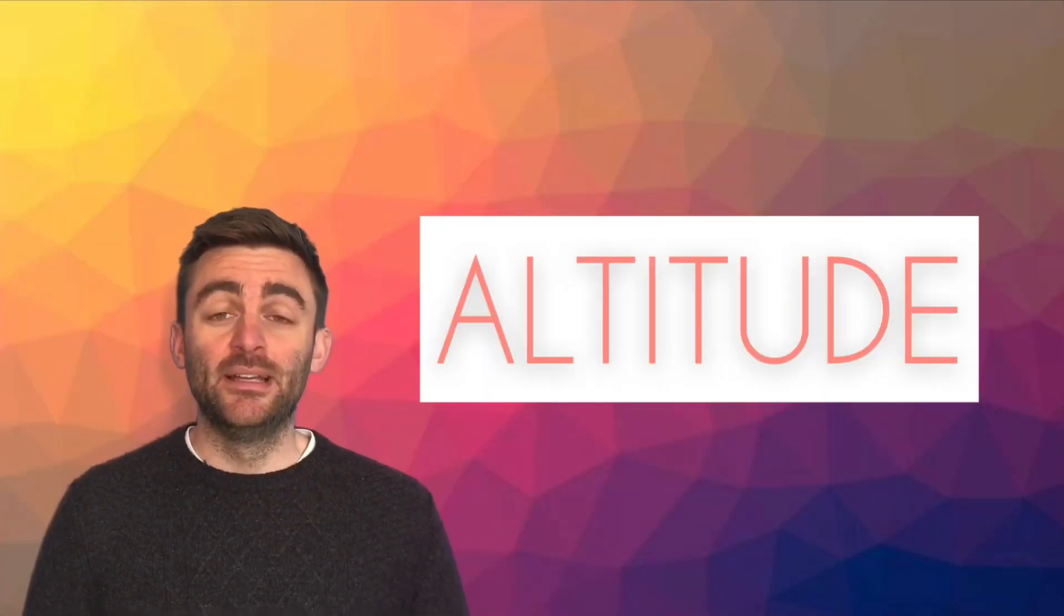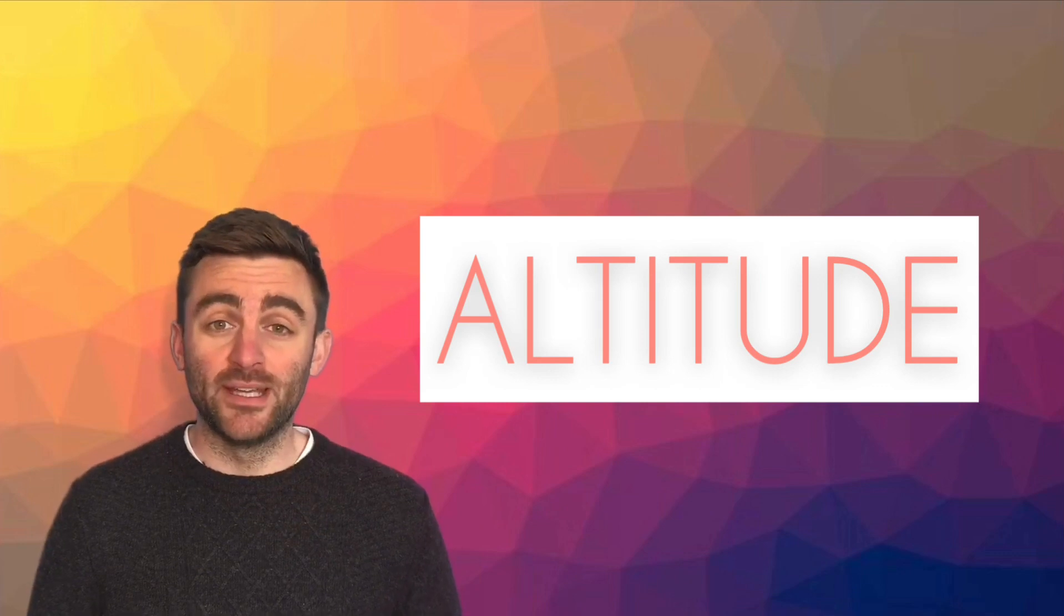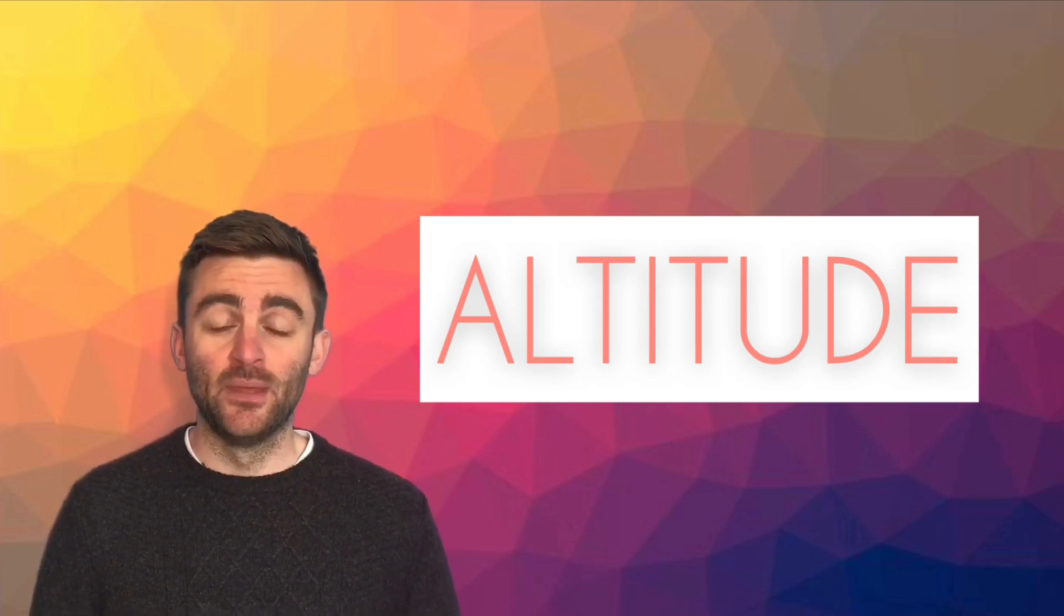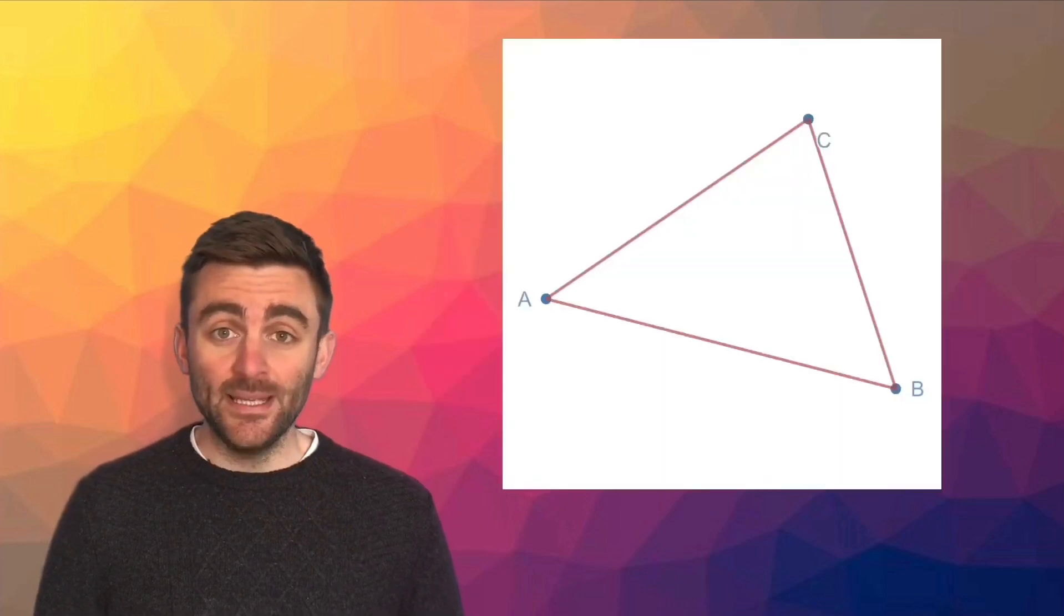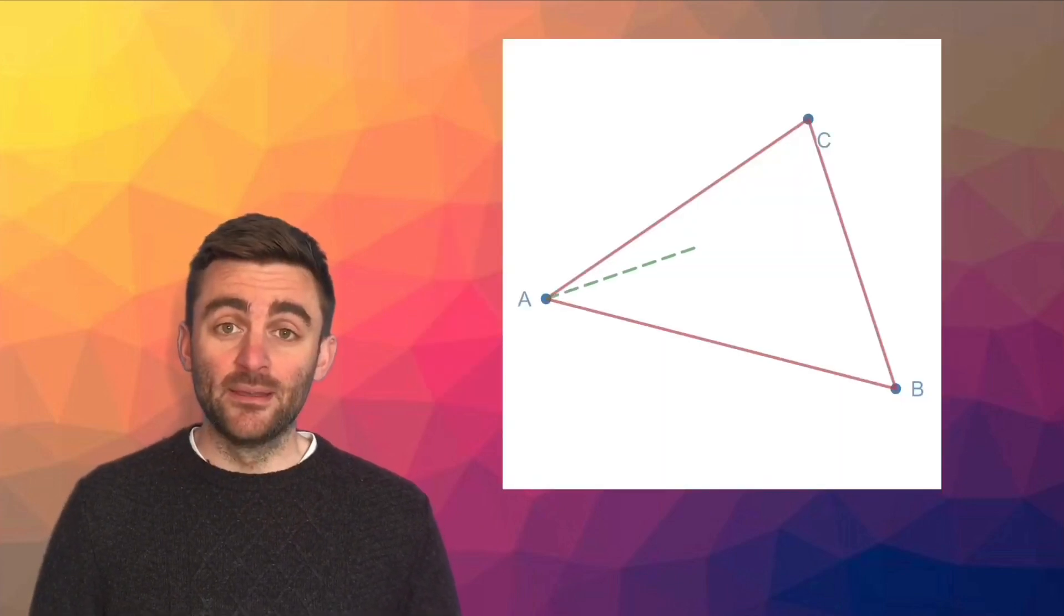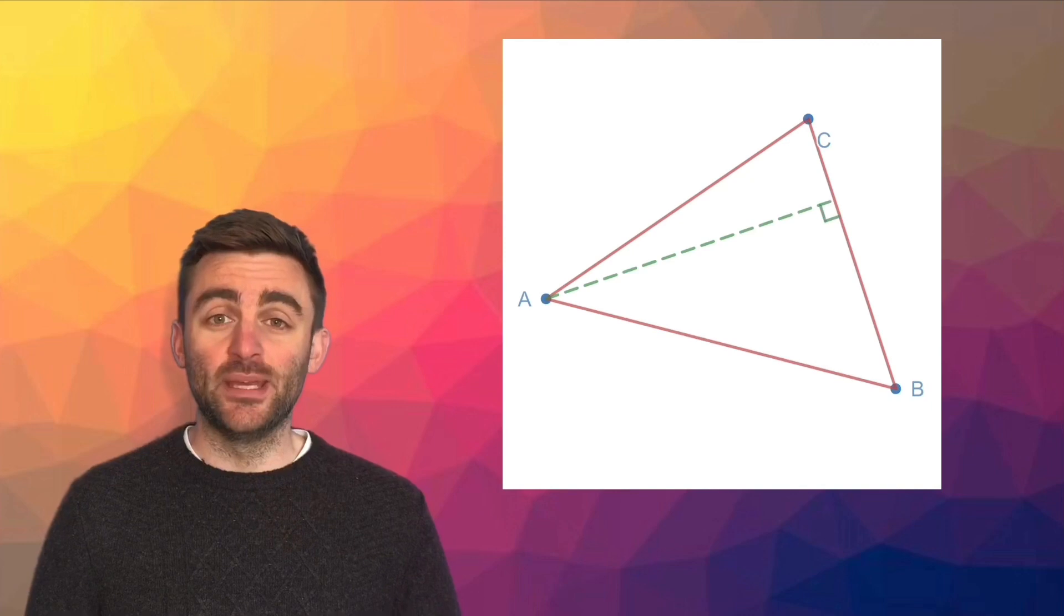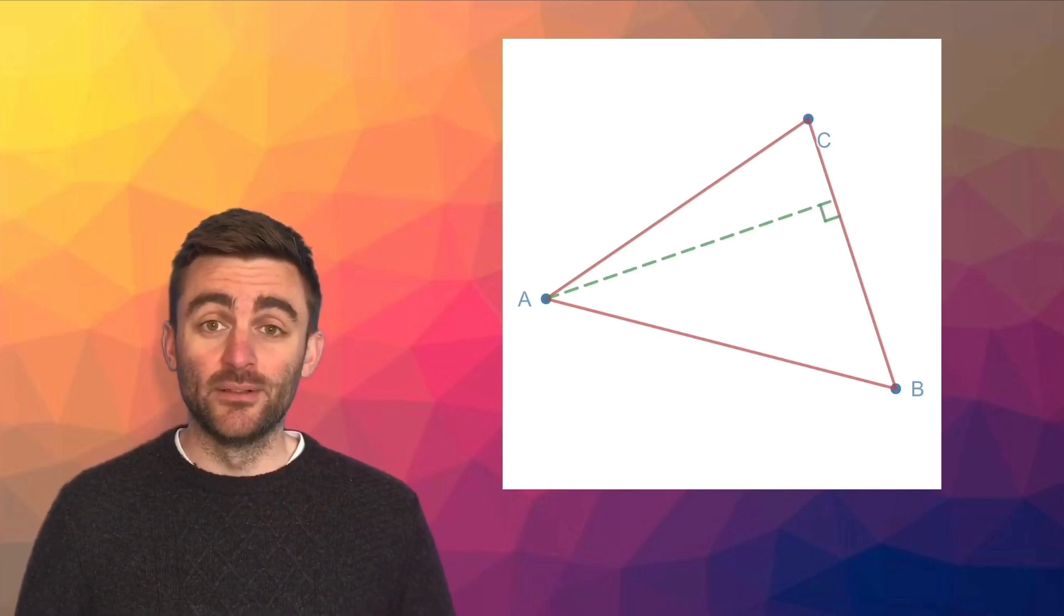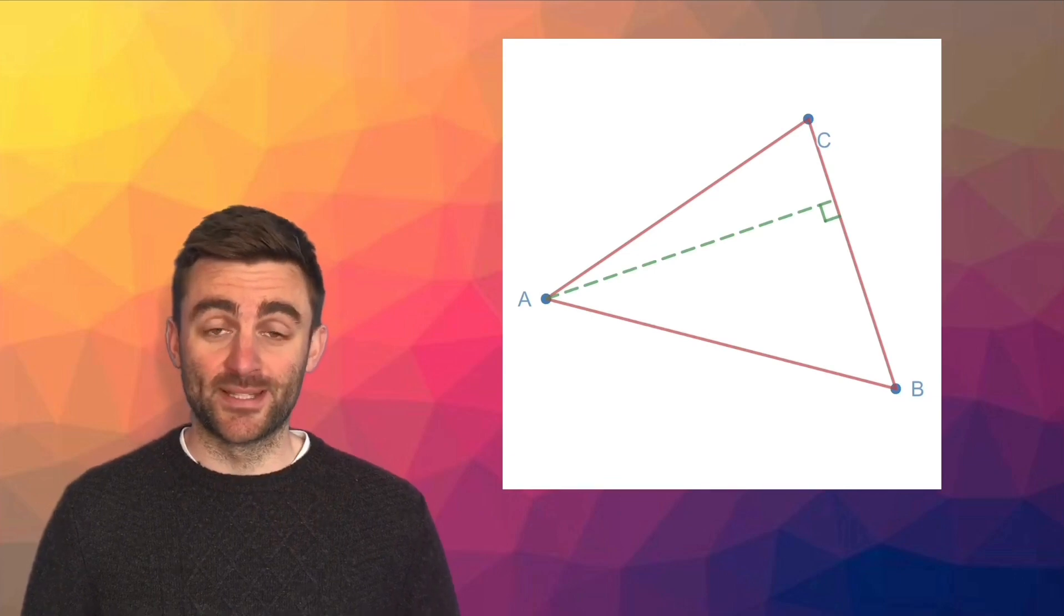An altitude of a triangle is a line which passes through a vertex and which is perpendicular to the opposite side. So in triangle ABC, the altitude from A is the line which passes through A and which meets BC at a right angle so that it's perpendicular to the opposite side.